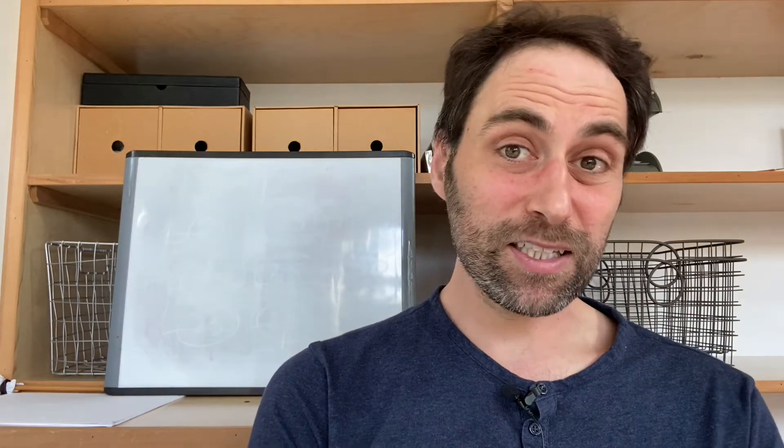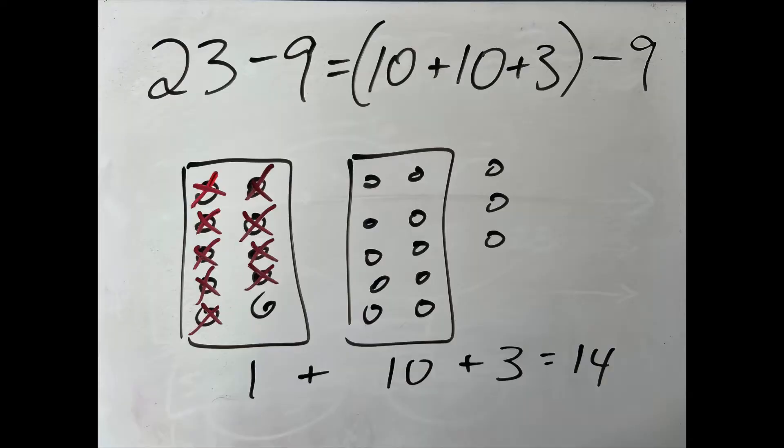Maybe you think of 9 as 6 plus 3. You're going to subtract the 3 to get from 23 to 20, then subtract the 6 to get down to 14.